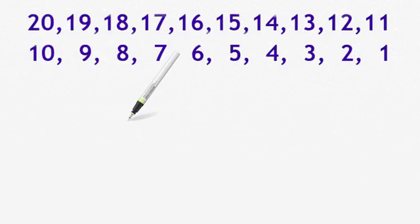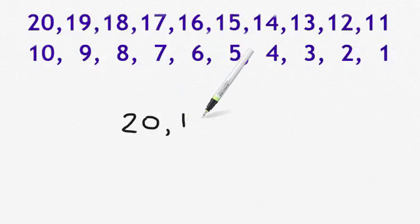So let's practice counting some numbers in reverse, going backwards. So if I had the number 20, what would be my next number? If you look up at your number line, you can see it right here. The next would be 19. Then what would come next? That's right, 18.